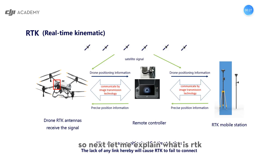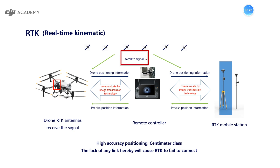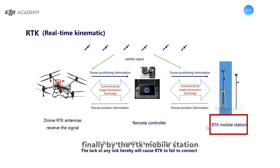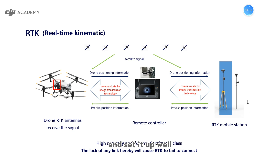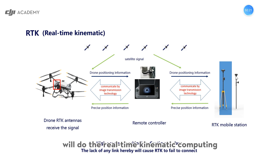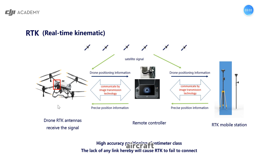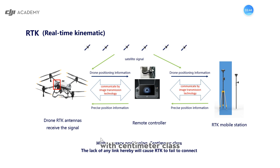RTK stands for Real-Time Kinematic. After turning on the aircraft, it will get the satellite signal and have positioning information. This positioning information will be received by the RTK mobile station through the remote controller. The RTK mobile station must be turned on and set up properly, and it will do the real-time kinematic computing continuously. Finally, the RTK mobile station passes the precise position information to the remote controller and then to the aircraft.